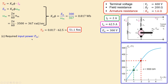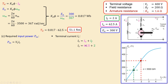Moving on to question C — the required input power. The input power is the terminal voltage times the terminal current. The terminal current is the sum of the armature current and the field current, so that is 62.5 plus 2, giving 64.5 amperes. Substituting the values: 400 times 64.5 gives 25,800 watts. That is our required input power.